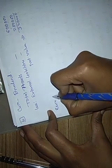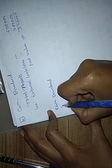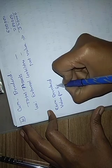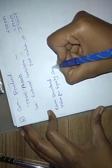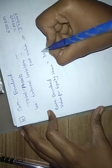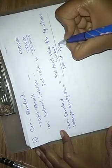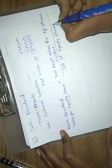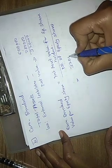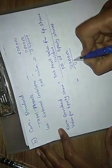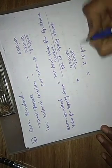Then we calculate the cum-dividend value per equity share. The formula is net asset value available for equity shareholders divided by number of equity shares. The net value is rupee 3 lakh 20,000 divided by the number of equity shares, which is 20,000. Here we get rupee 16 per equity share.